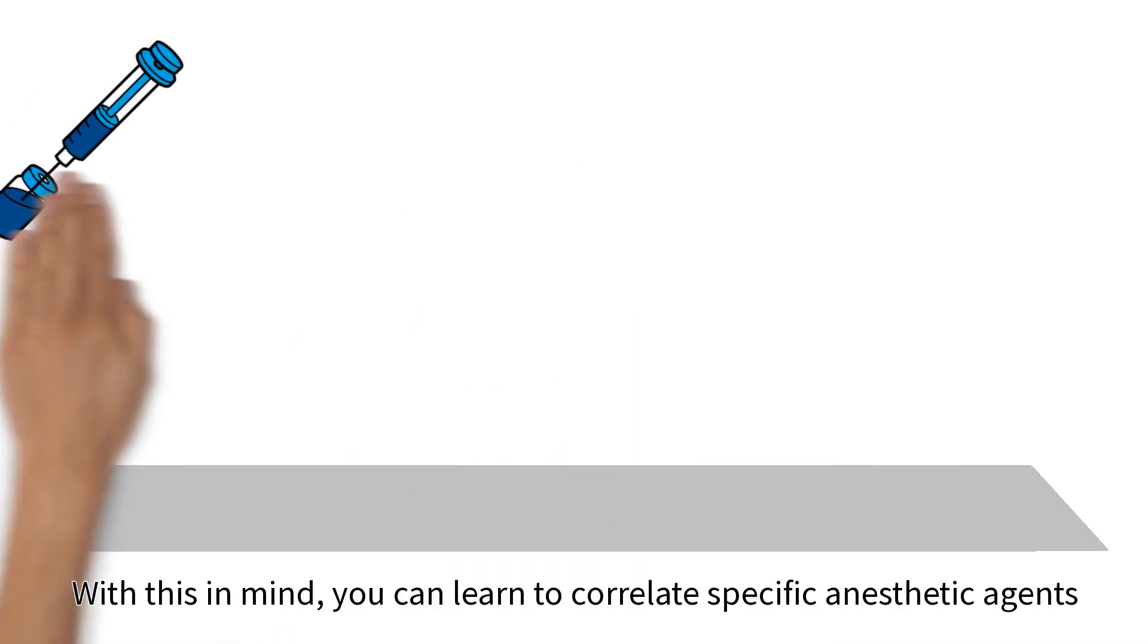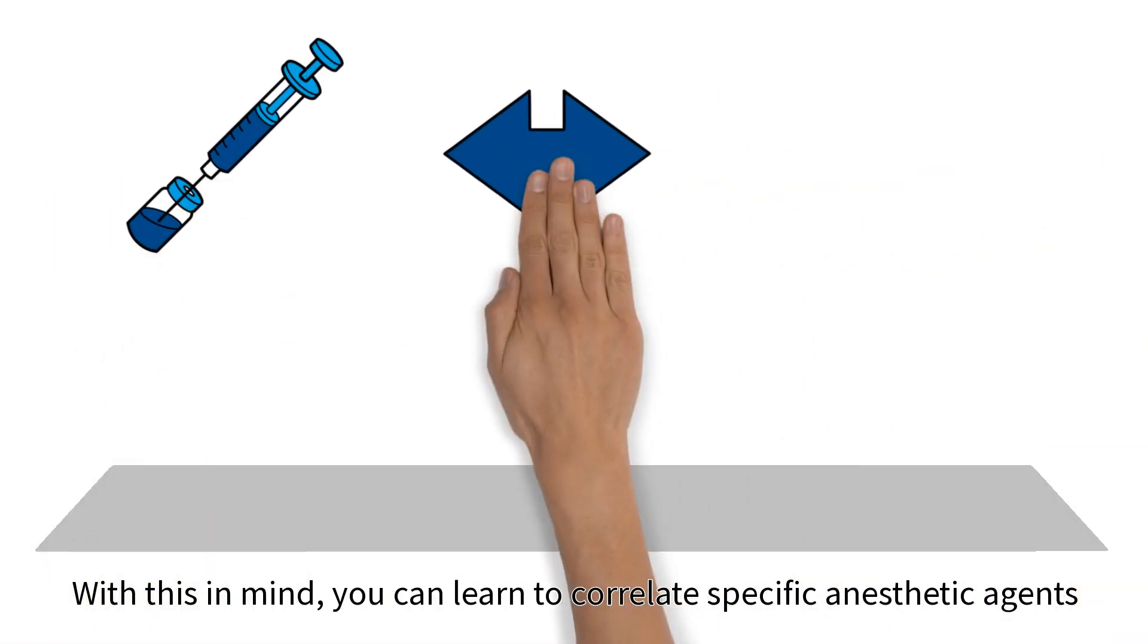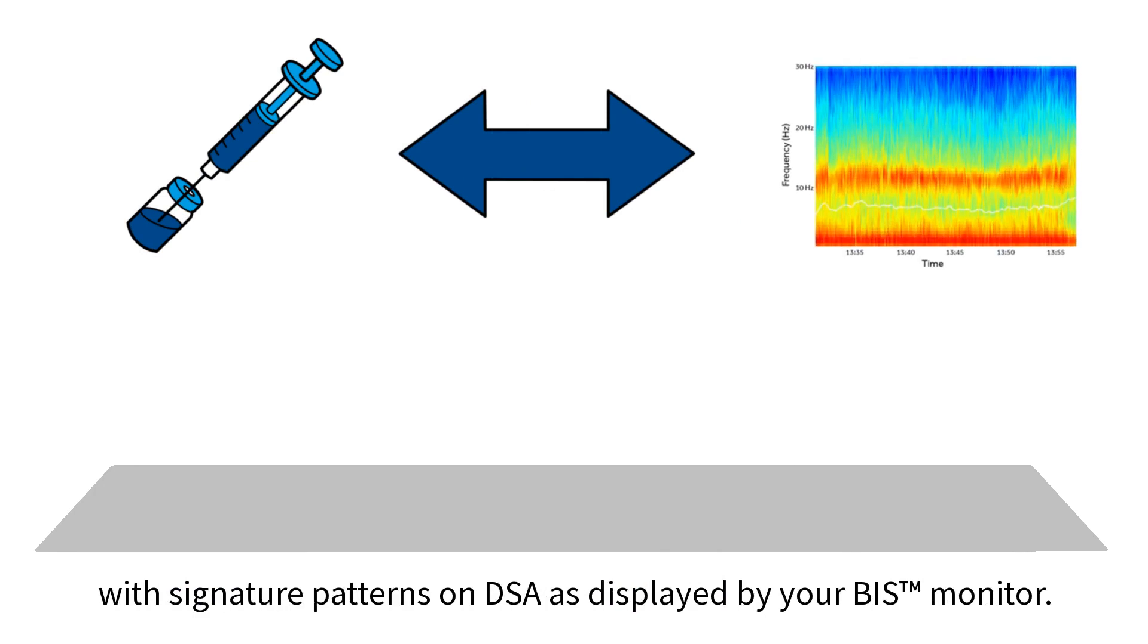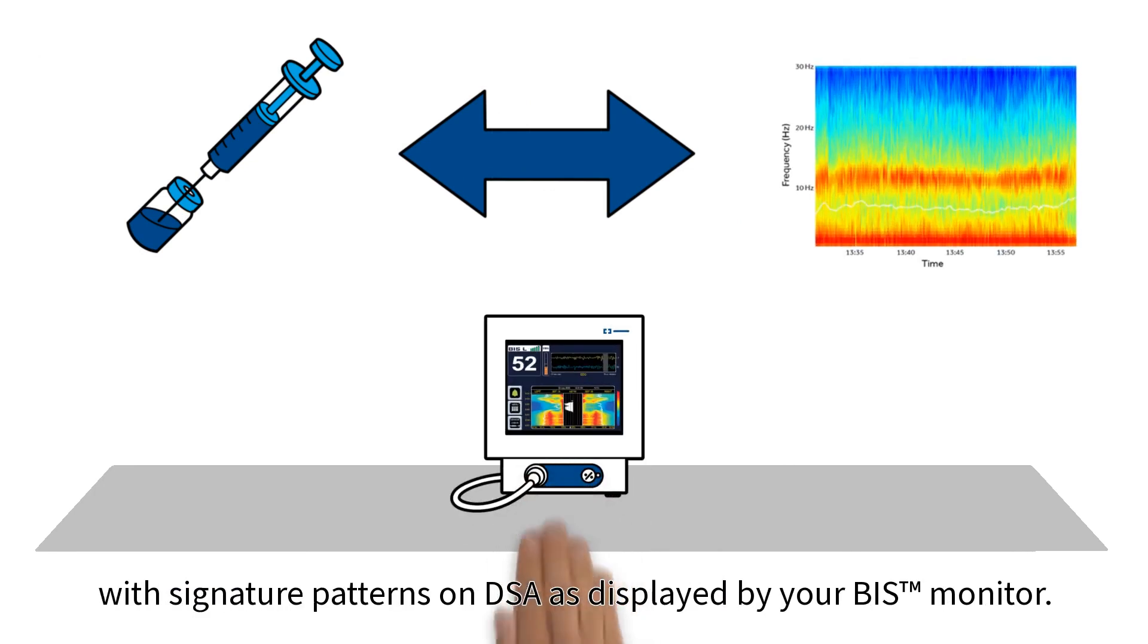With this in mind, you can learn to correlate specific anesthetic agents with signature patterns on DSA, as displayed by your BIS monitor.